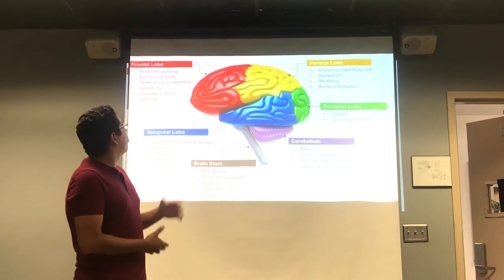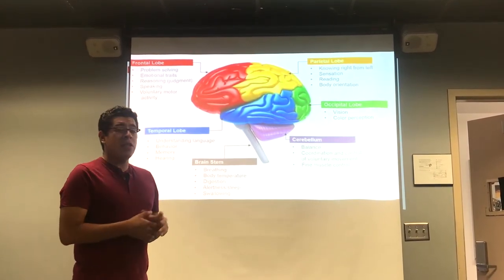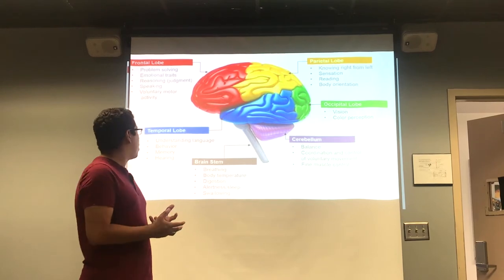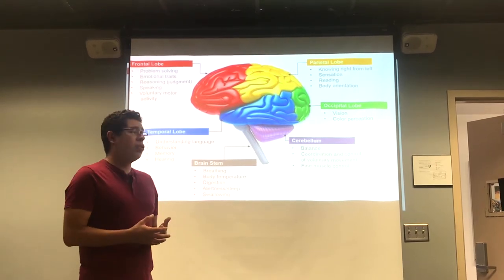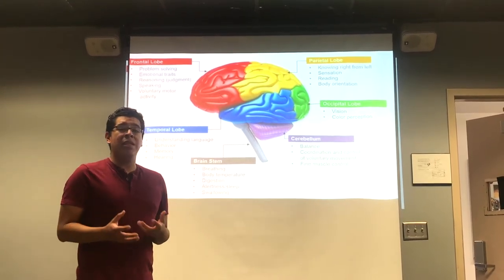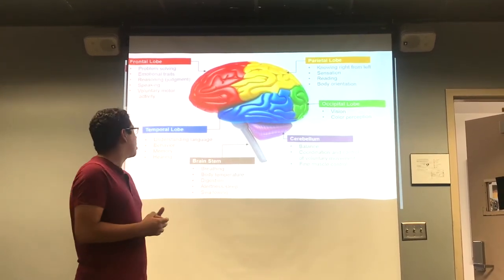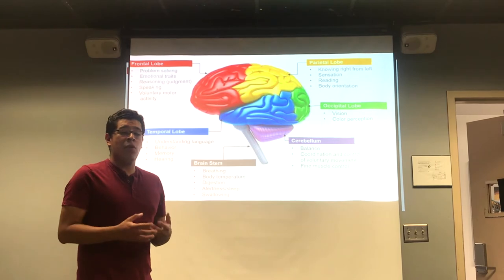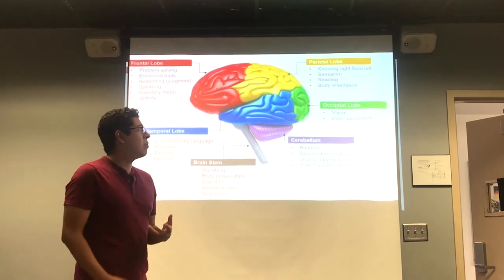First we have the frontal lobe, which deals with problem-solving, emotional traits, reasoning and judgment, speaking, and voluntary motor activity.